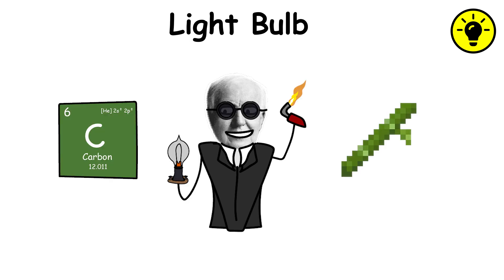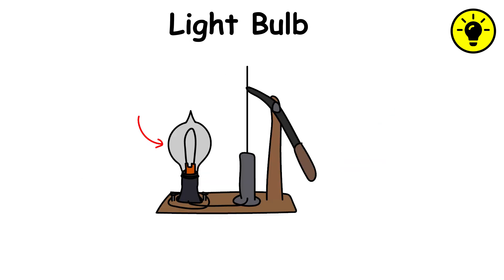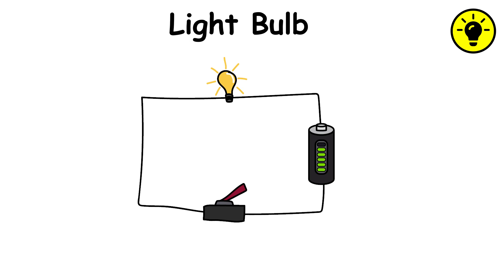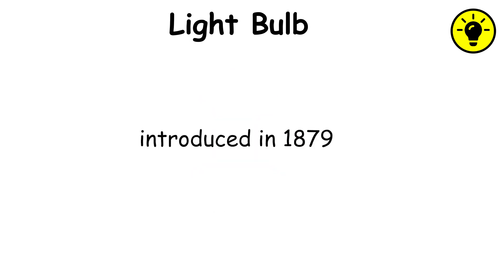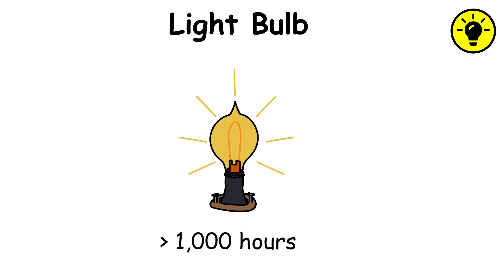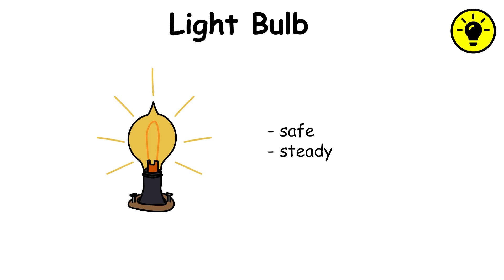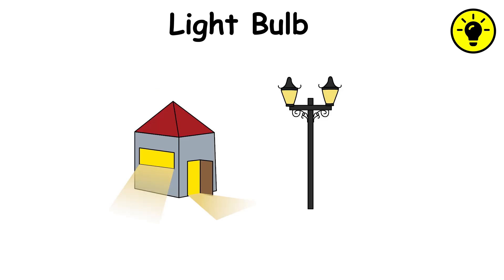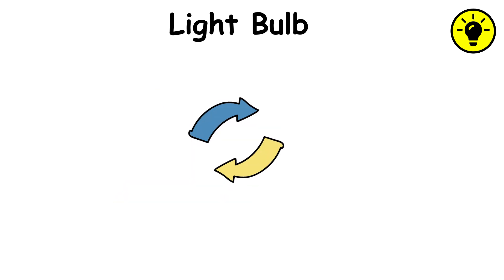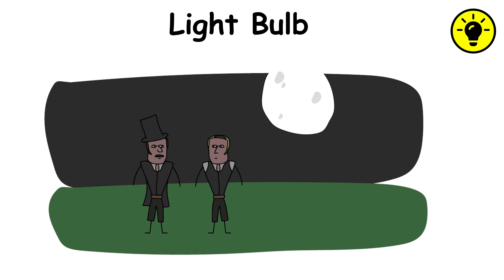He used carbonized bamboo filament, built a reliable vacuum inside the bulb, and designed a full electrical system to power it. Introduced in 1879, his version could glow for over 1,000 hours. The lightbulb became the symbol of modern civilization, bringing safe and steady light to homes and streets, extending work hours, and transforming how humans lived after dark.